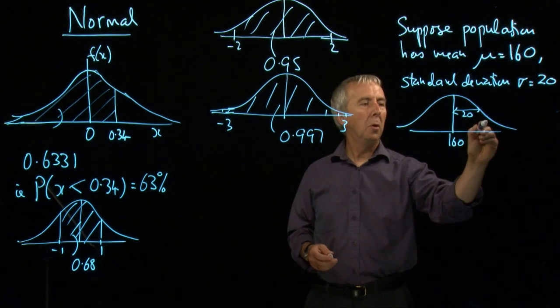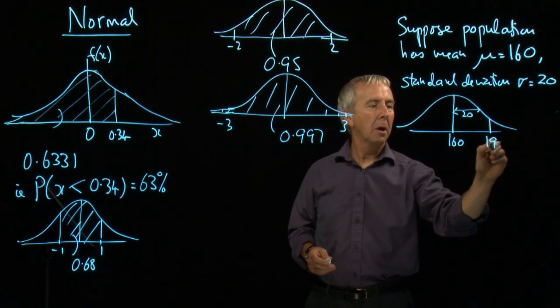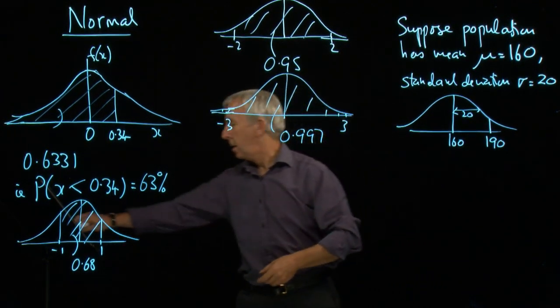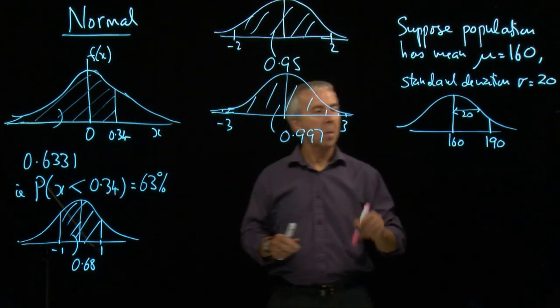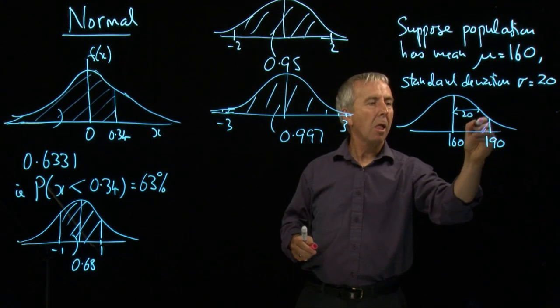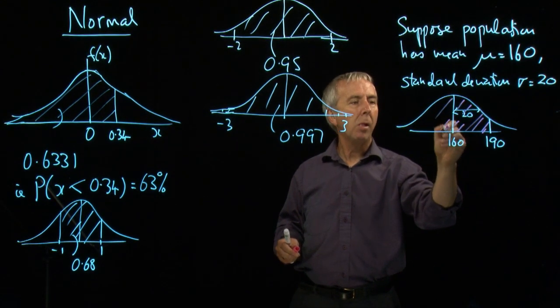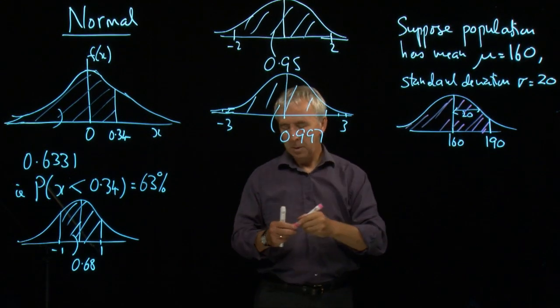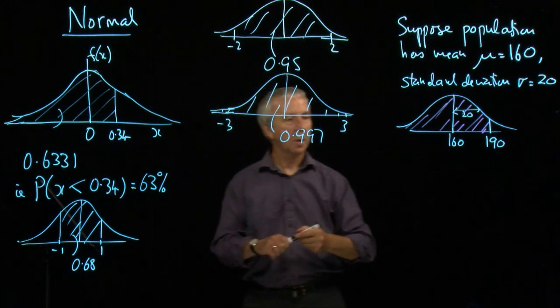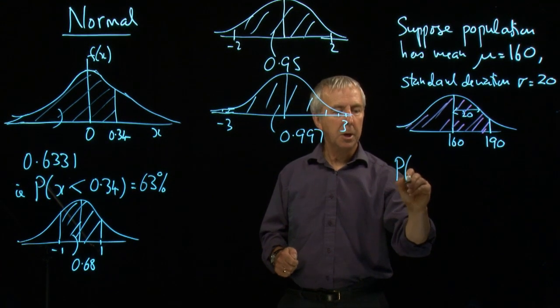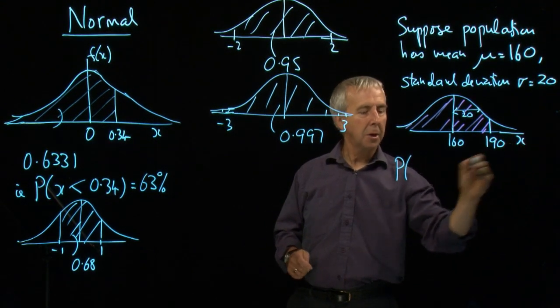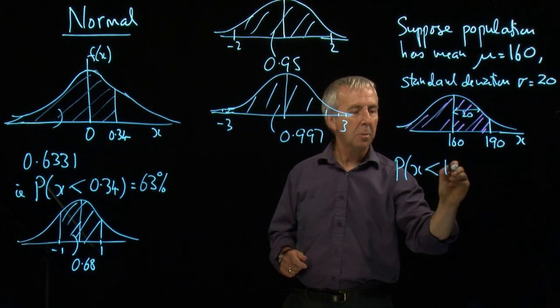And we want to know, what's the probability of being less than 190? What's this area? So we want the probability that x is less than 190.